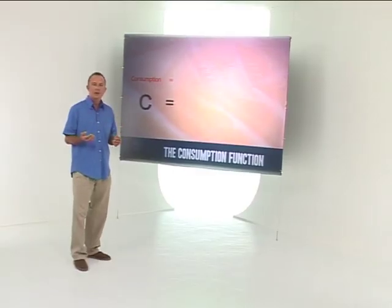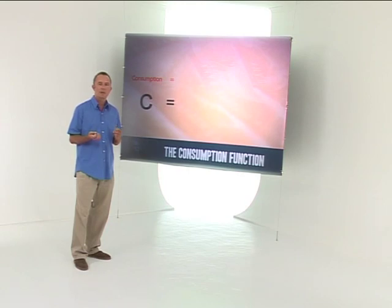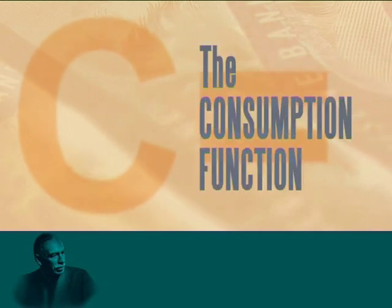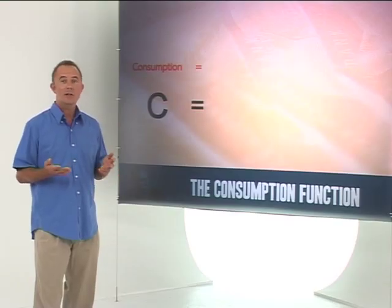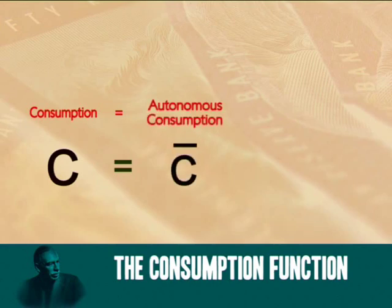We've previously used functions to analyse economic behaviour. When we looked at demand and supply, we saw that demand was a function of price, income, the number of buyers, and so on. We'll now create a consumption function to help us better understand our behaviour as consumers. Consumption spending, C, is made up of two types of spending: what we call autonomous consumption and induced consumption.